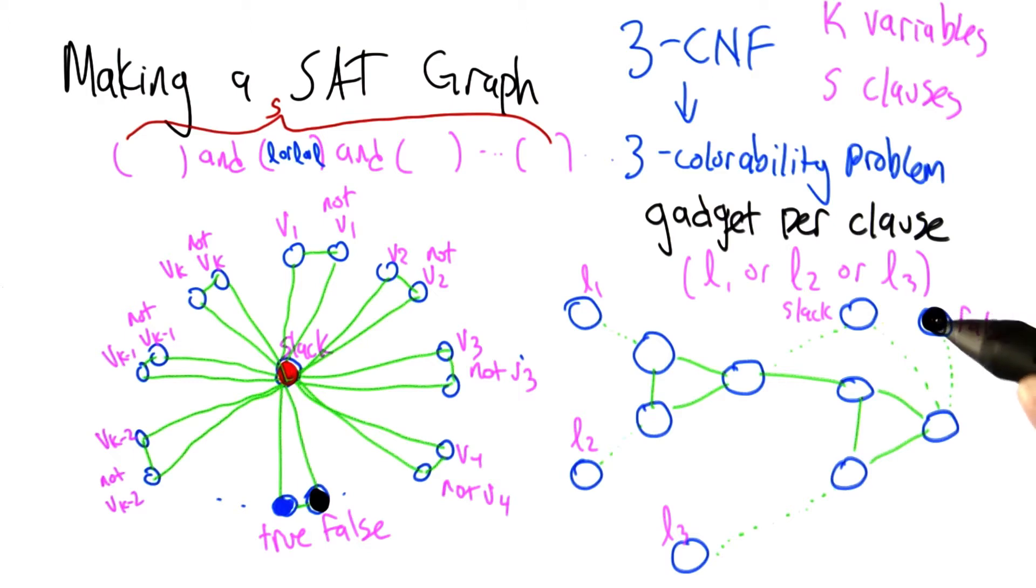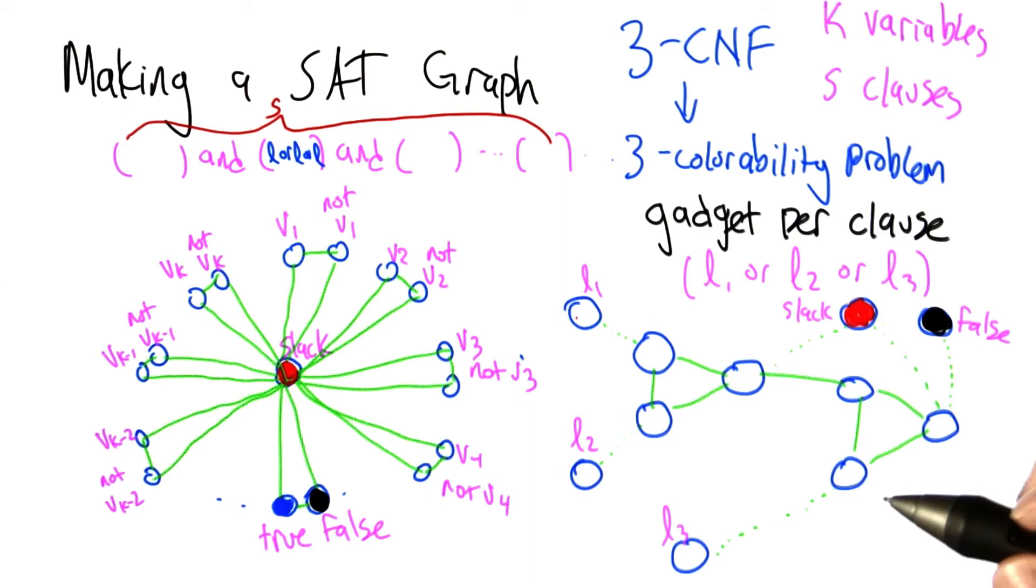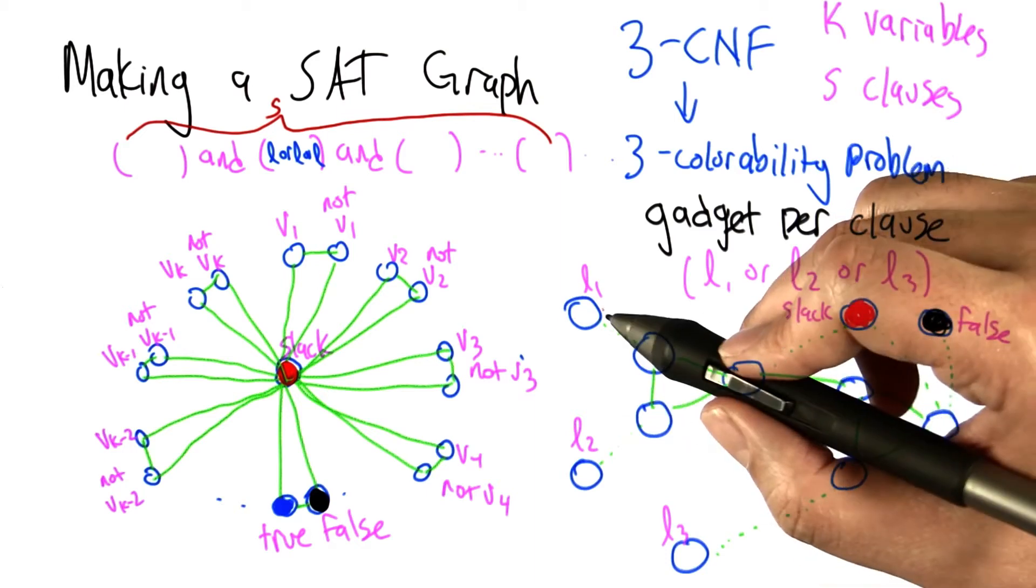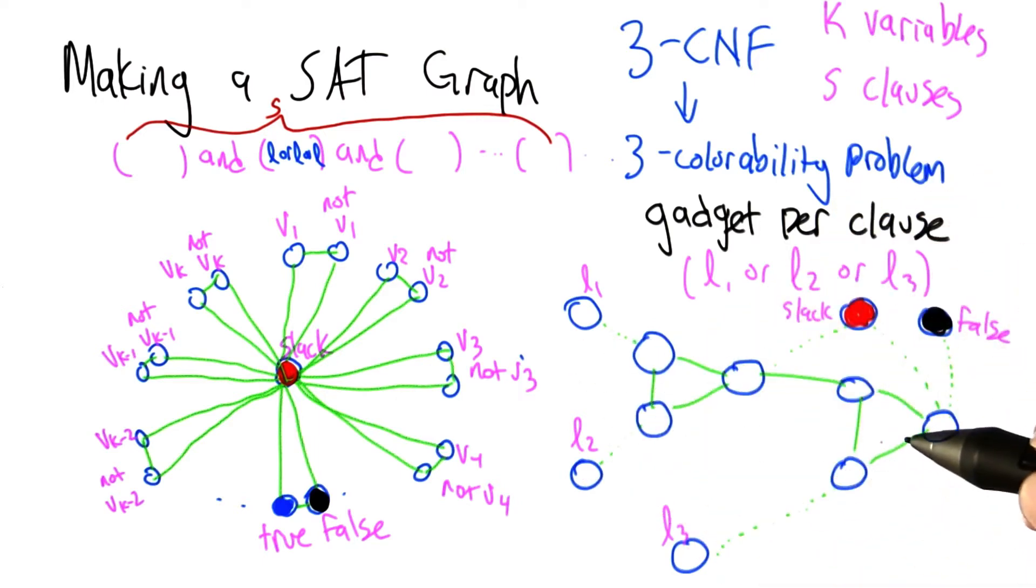Just to simplify things, remind you that the false node is colored black, the slack node is colored red, and these literal nodes are either going to be blue or black, each one. And now what I'd like to do is show you that the different ways of coloring these either allow the rest of this structure to be colored with 3 colors or not.